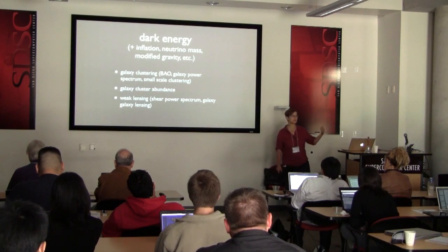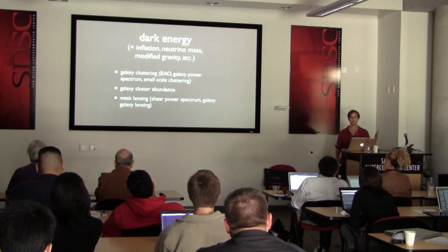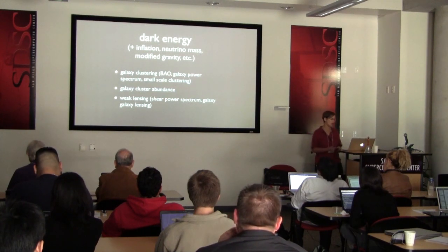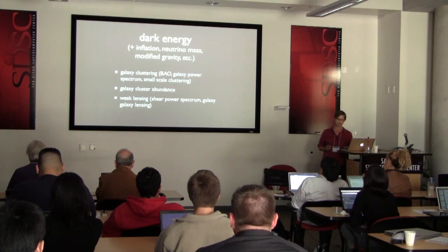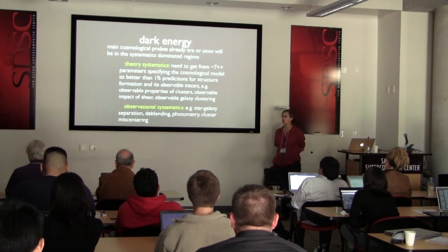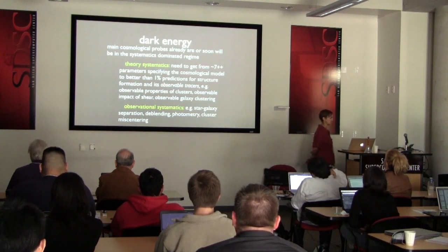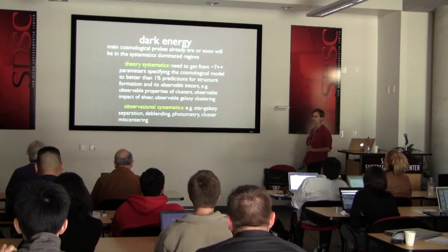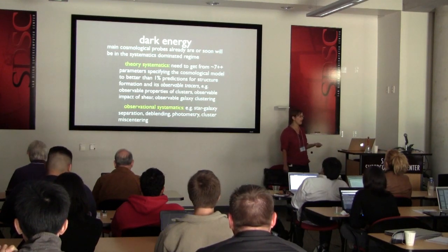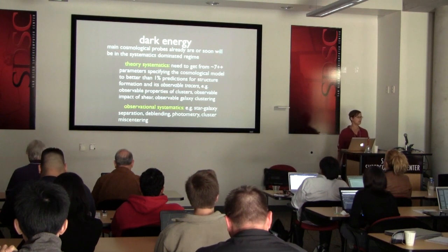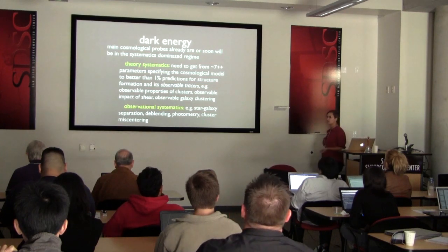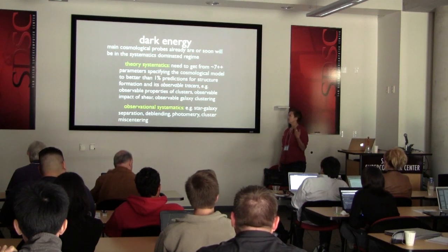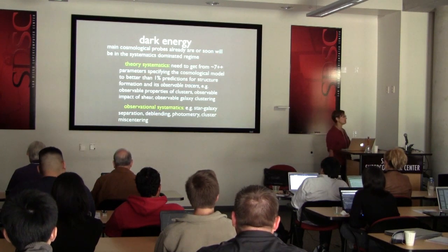There are several cosmological probes: galaxy clustering on a wide range of scales — baryon acoustic oscillations at about 150 megaparsecs, but also small-scale galaxy clustering constraints — galaxy cluster abundance as a sensitive probe of both the evolution of structure and the acceleration of the universe, and weak lensing. The main cosmological probes are already or will soon be in the systematics-dominated regime. We need to get from those cosmological parameters to better than a percent predictions for structure formation — not just the dark matter, but the observable tracers including observable properties of clusters.